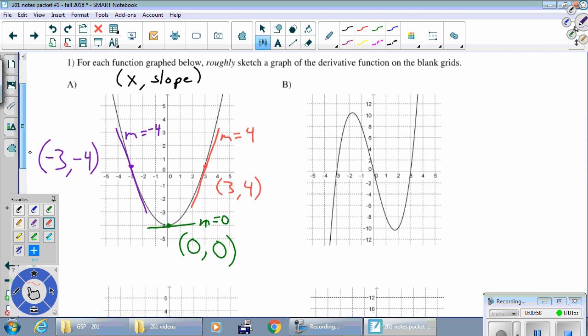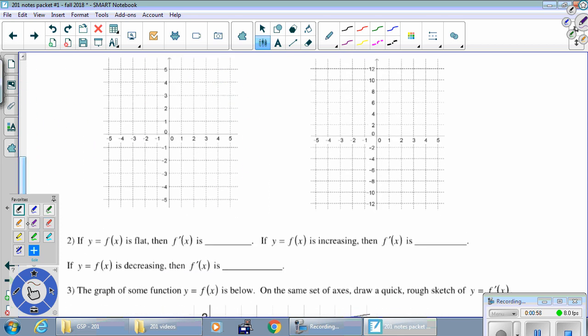So we're going to plot those three points down below. Negative 3, negative 4, 0, 0, and 3, 4. Now this graph could be curvy going through these things. It also could be straight. We really don't know. I'm just going to connect these with a straight line and say this is the graph of y equals f prime of x.